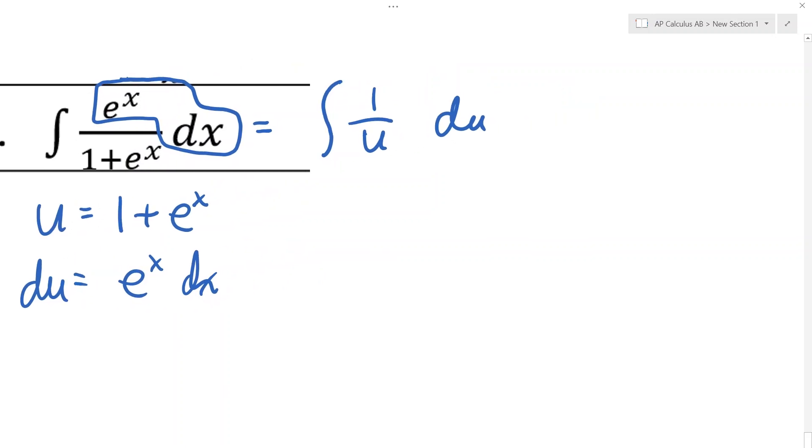So now we have 1 over u, and the integral of 1 over u is the natural log of the absolute value of u, which was this.